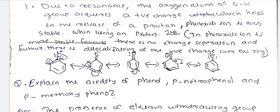The resonance stabilization is stable in the phenoxide ion. In the phenoxide ion, there is no charge separation. Further, there is delocalization of negative charge over the ring. Resonant structures are possible in phenoxide ion as well as in phenol. That is why phenol is more acidic than alcohol, but less acidic than carboxylic acid.